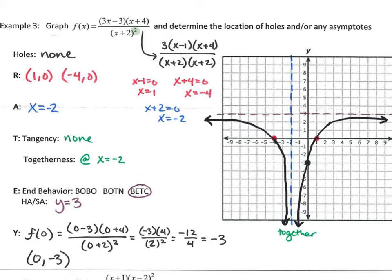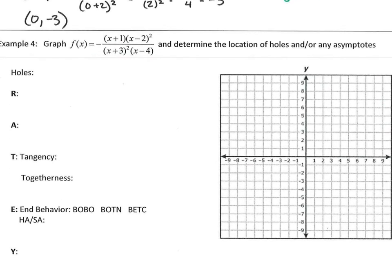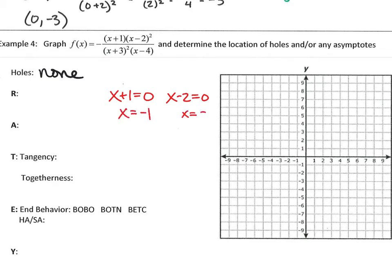Now let's do one all the way together from start to finish so you can see the entire Rady method. The function is already factored for you. Does anything cancel out? No, so there are no holes. For R, we find the roots by setting each numerator factor equal to zero — my roots are at x equal to negative 1 and x equal to 2. We write those as coordinate points and plot them on the graph.